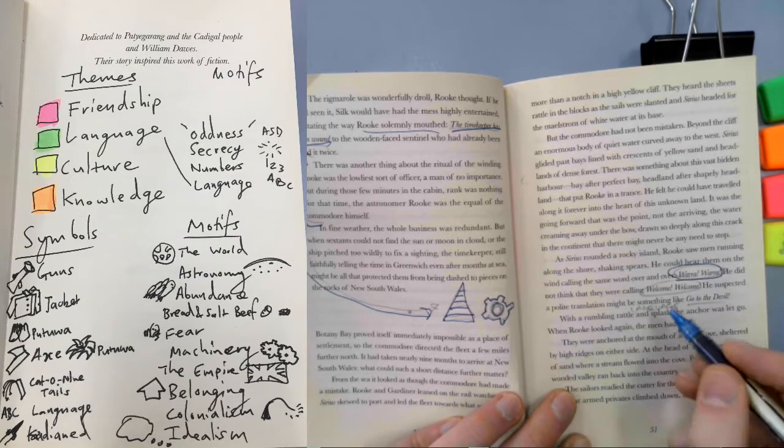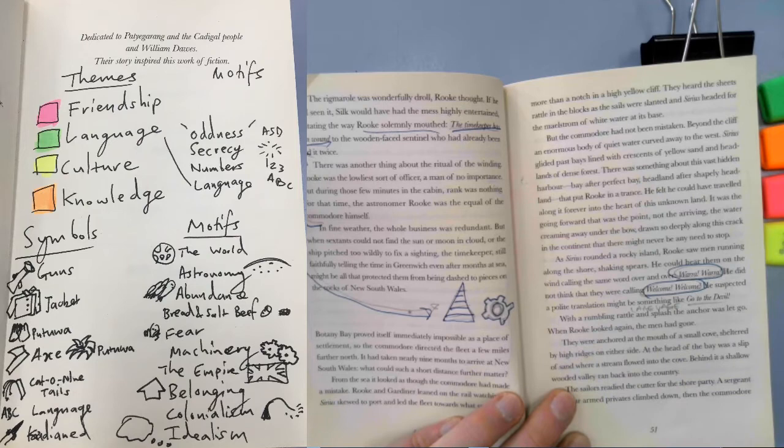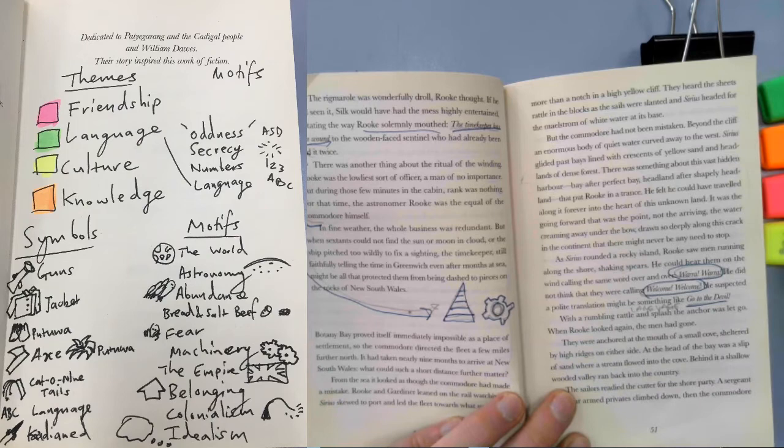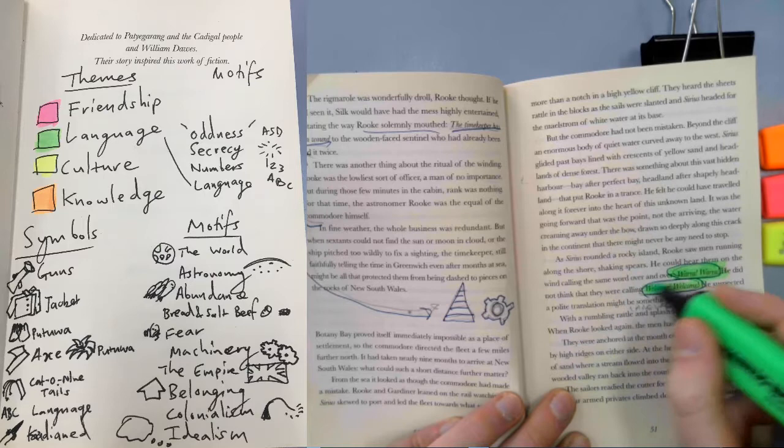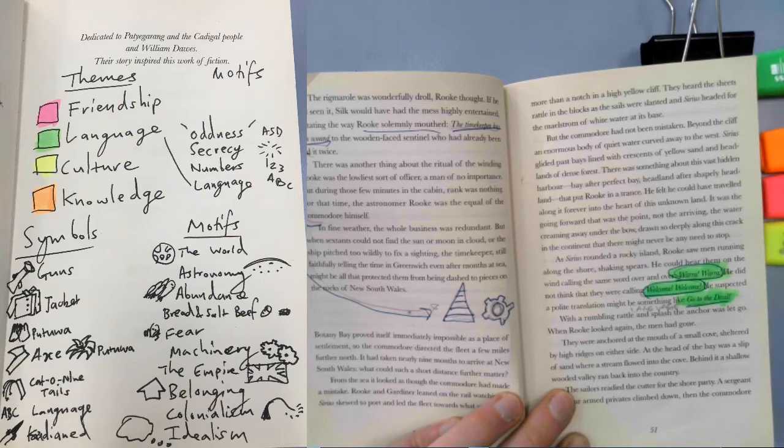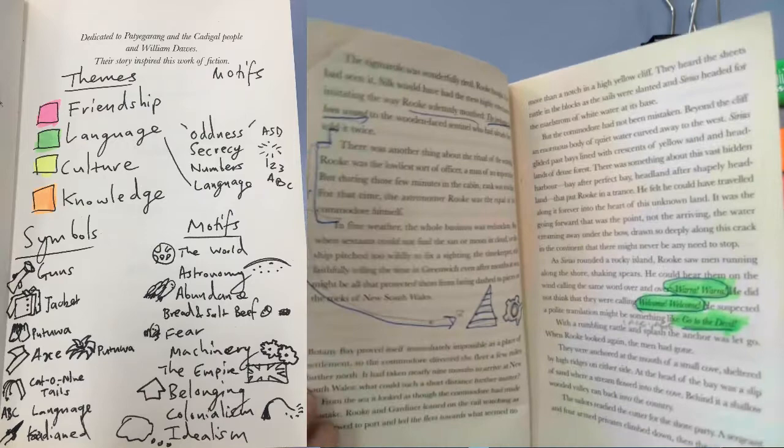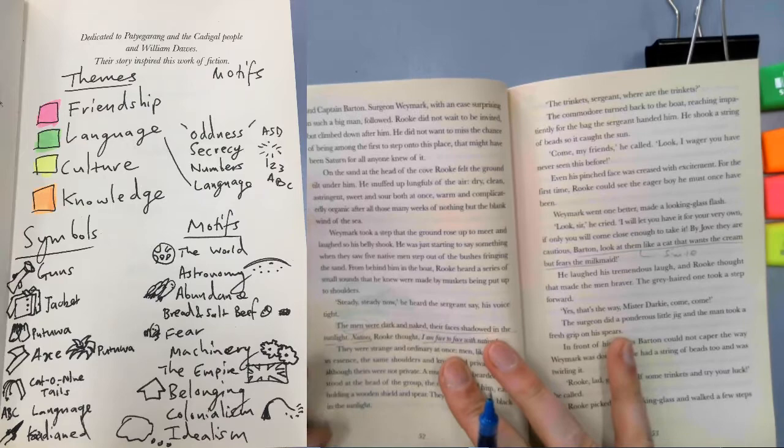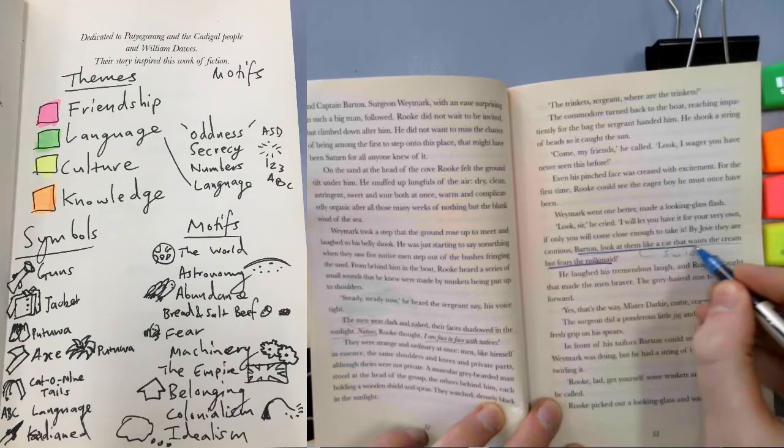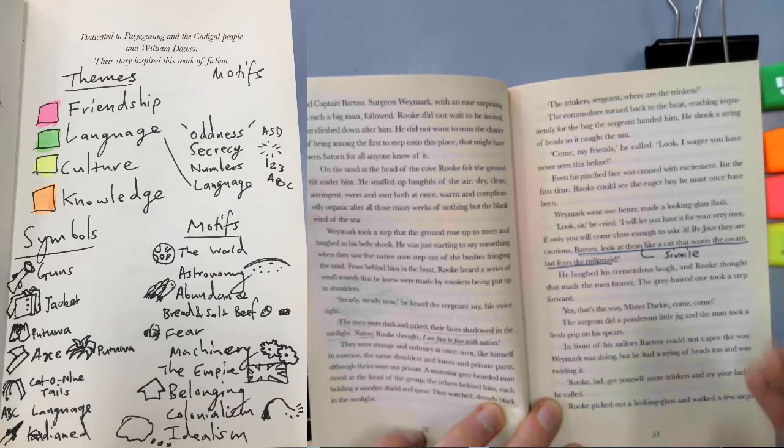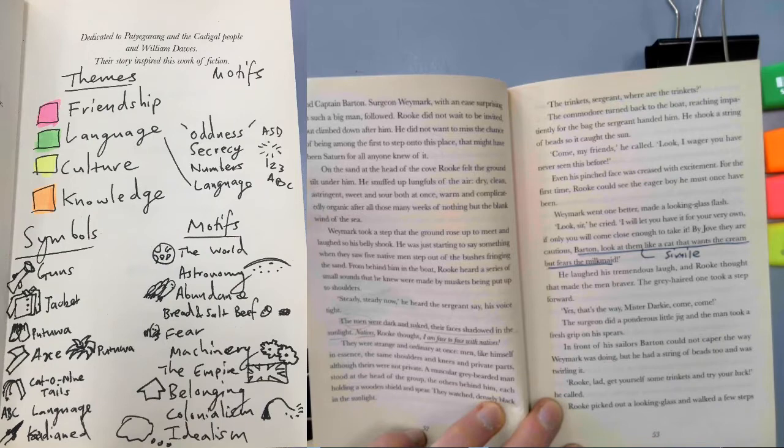So they see the natives, as they're referred to here, and they yell out, and he did not think they were calling welcome, welcome. He suspected a polite translation might be something like go to the devil. So straight away, he's understanding, or perhaps he's misunderstanding, but he's assuming that they innately know that, okay, we're being invaded or we're being taken over or something like that. From what we know about oral histories that have been passed down, it took our Indigenous people a little while to work out what was occurring, and that these people weren't just visiting like other people had in the past, but actually staying around for good.